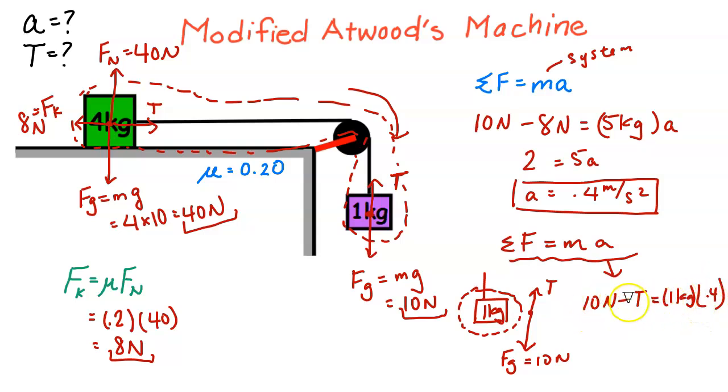So we have 10. We have 0.4 on the right-hand side. I'm going to subtract 0.4 on both sides. So I'm going to end up with 10 minus 0.4, and I get 9.6 newtons on the left is equal to T, which is the tension.